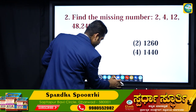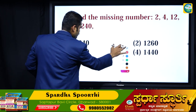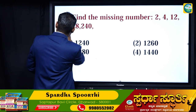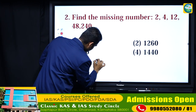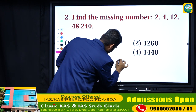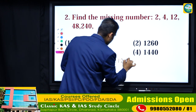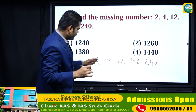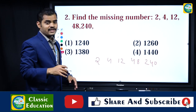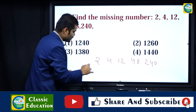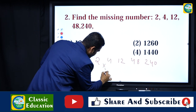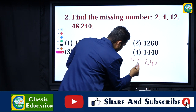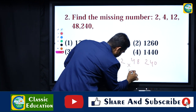Next question — number series: 2, 4, 12, 48, 240. The difference is not constant, so this is not an arithmetic series. It is based on multiplication. 2 multiplied by 2 is 4, multiplied by 3 is 12, multiplied by 4 is 48, multiplied by 5 is 240. So the pattern follows multiplying by successive integers.